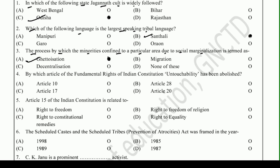Question number four: By which article of the fundamental rights of the Indian Constitution has untouchability been abolished? Remember the worksheet — options are Article 10, 28, 17, or 20. The right answer is Article 17.